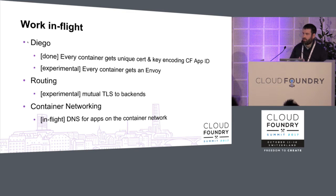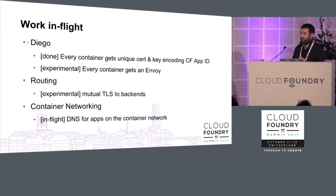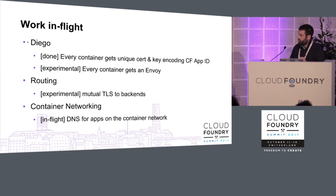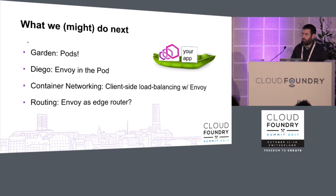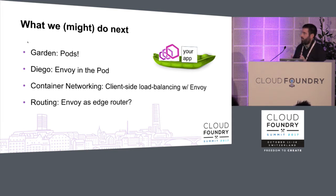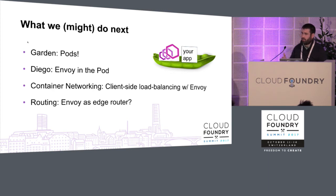Here's what's already in progress and what's upcoming. Diego has already done the work to give every app instance its own certificate with its identity encoded, and has experimental work to provide an Envoy to every container — injected the same way as the SSH daemon and health checks. The routing team already has experimental features for mutual TLS to backends. The container networking team is working on providing DNS between applications on the container network, helpful for east-west traffic. Garden has incepted on a new thing called pods — multiple containers sharing a network namespace — so your app could be one container and Envoy a separate container with its own filesystem and memory namespace, making it easier to swap or upgrade the proxy.